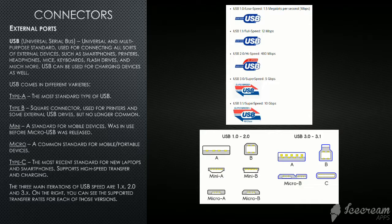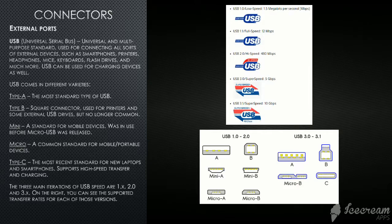USB comes in different varieties. Type A is the most standard type. Type B, or the square connector, is used for printers and some external USB drives but is no longer common. Mini USB was a standard for mobile devices before micro USB was released, but is still available on some smartphones. Micro USB is still a common standard for mobile and portable devices. USB Type C is the most recent standard for new laptops and smartphones, supporting high-speed transfer and charging.